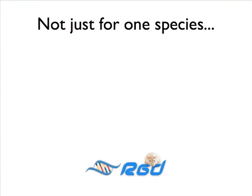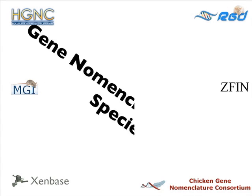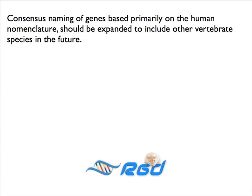With regards to genes, more recently the emphasis on standardization of nomenclature goes beyond publications of species-specific recommendations. The fields of comparative genomics and translational medicine require that gene symbols are consistent across multiple species. After a number of years where nomenclature groups for specific species informally collaborated to standardize nomenclature, in October 2009 a meeting on gene nomenclature across species was convened. The conclusions from that meeting were reported in the February 2010 issue of the Journal of Human Genomics, and included consensus naming of genes based primarily on the human nomenclature, which is already in use for human, mouse, rat, chicken, zebrafish, and xenopus, and should be expanded to include other vertebrate species in the future.